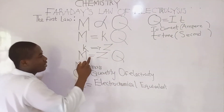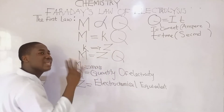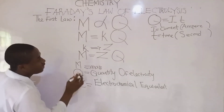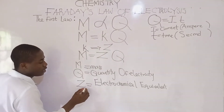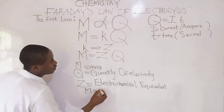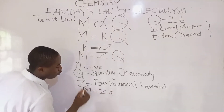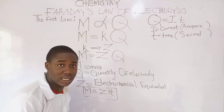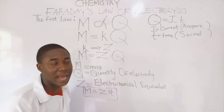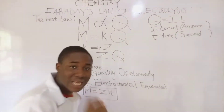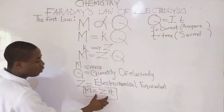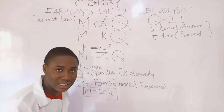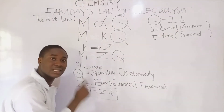You can see here I wrote mass is equal to ZQ. So I can change this Q to IT. Lastly, we get the equation for the first law to be mass is equal to ZIT, because Q, which is quantity of electricity, is equal to current times time. Current should be in amperes and time should be in seconds. This formula is very important when solving problems under the first law of Faraday's electrolysis.